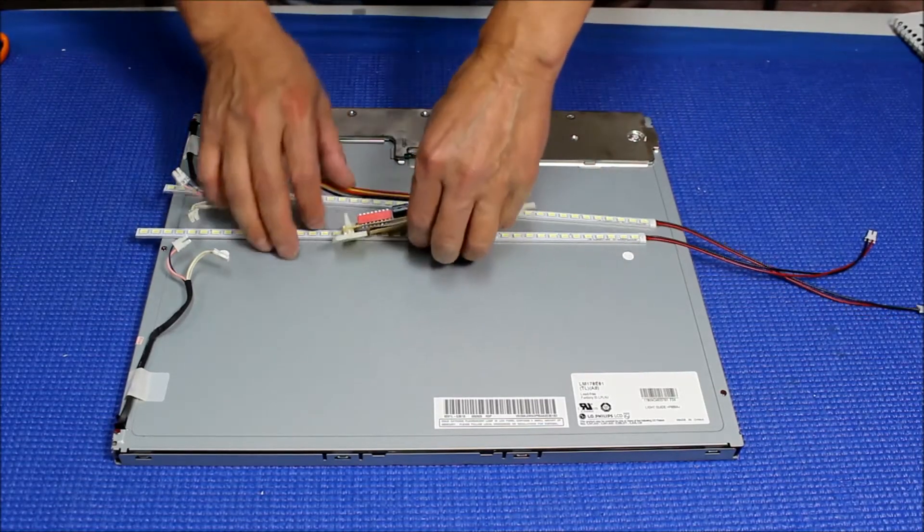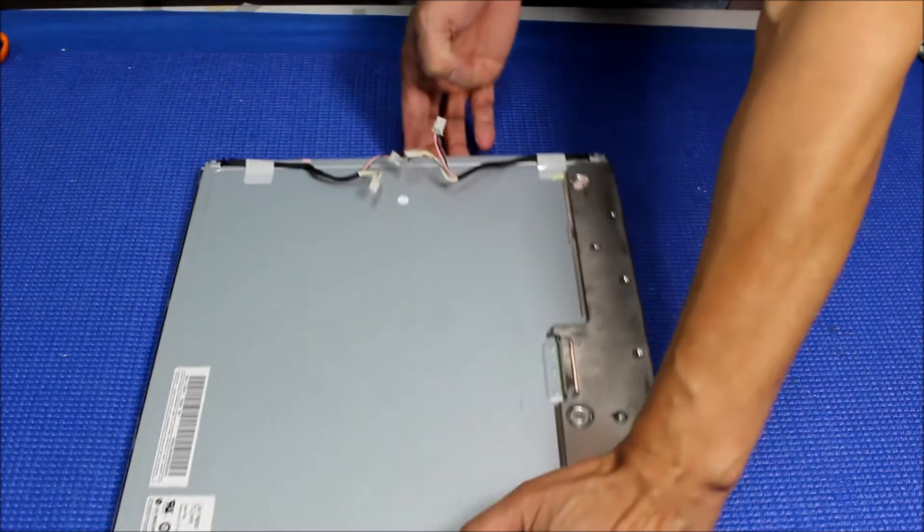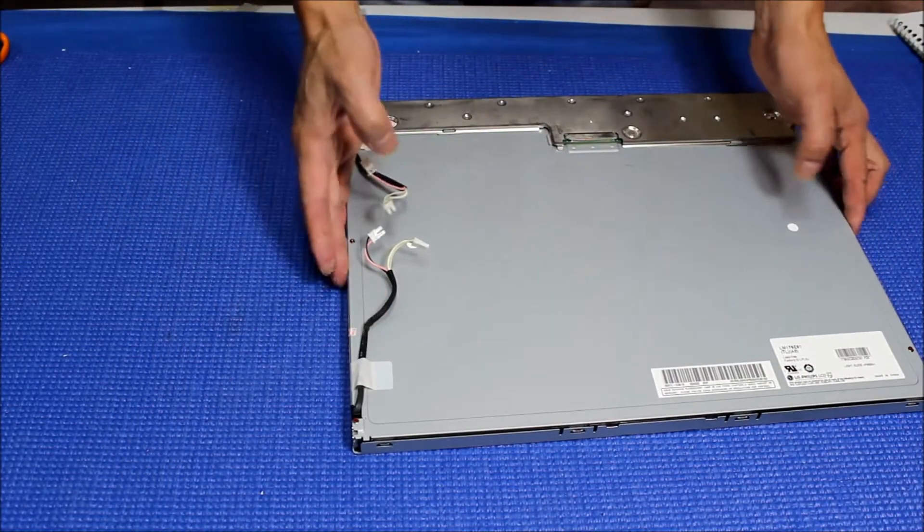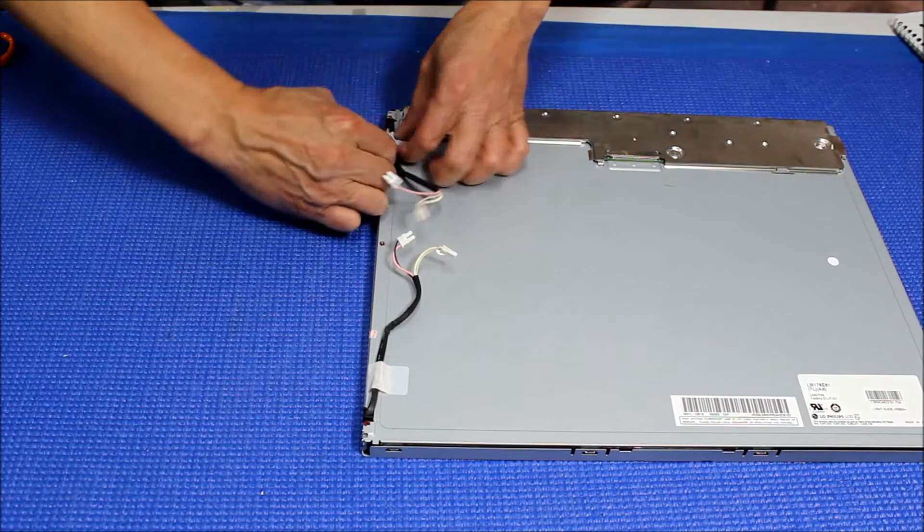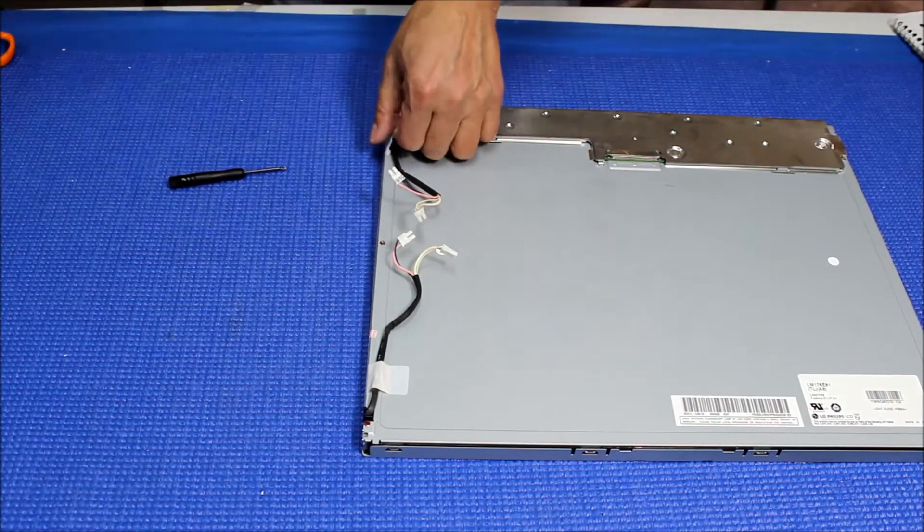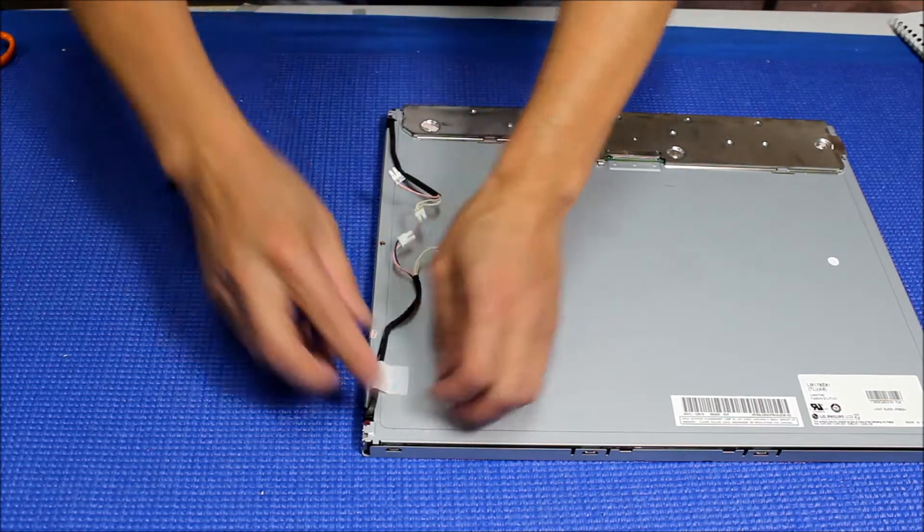So let's set aside the kit first. And let's take a look at this lamp. This one is quite easy, you just take out this tape. What I do is I just cut it. I don't need it anymore. Take it out.